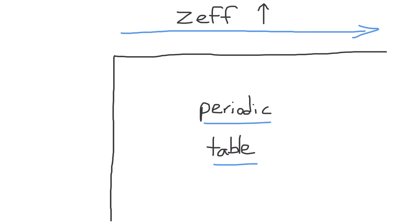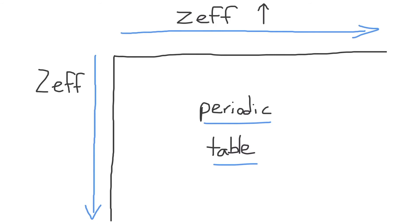Now that we have talked about the trend for effective nuclear charge as we move from left to right across a period, let's talk about the trend for Z effective as we move down a group or a column within the periodic table. As we move down a group, the effective nuclear charge Z effective remains approximately constant.